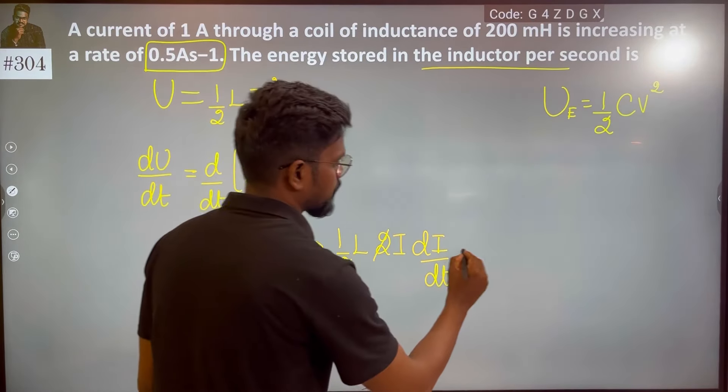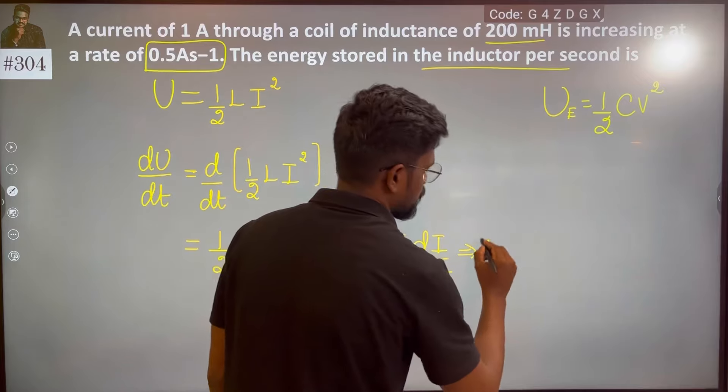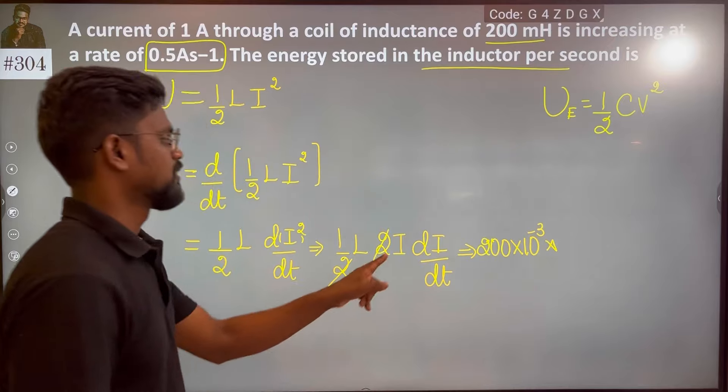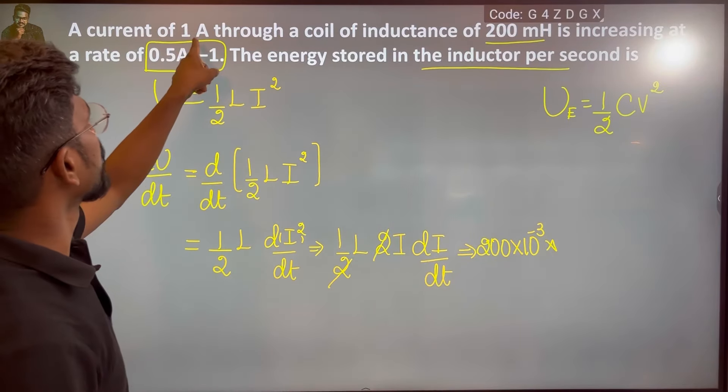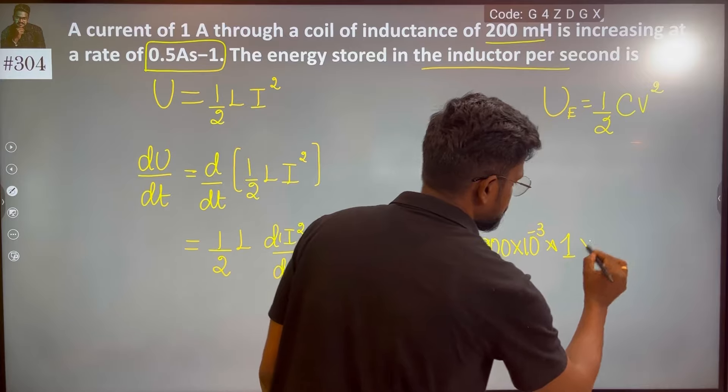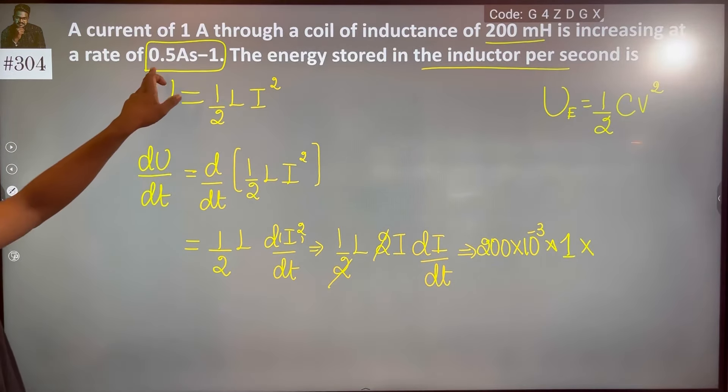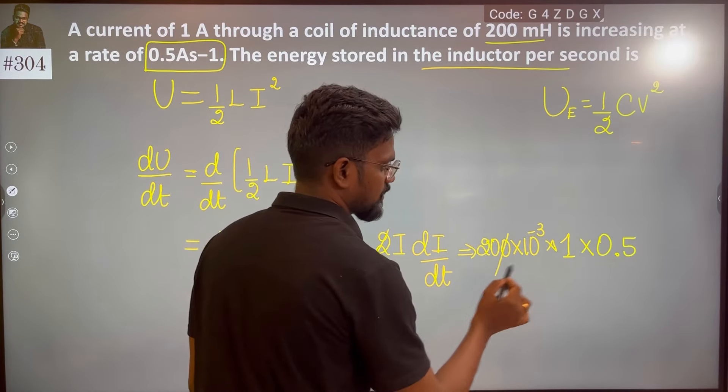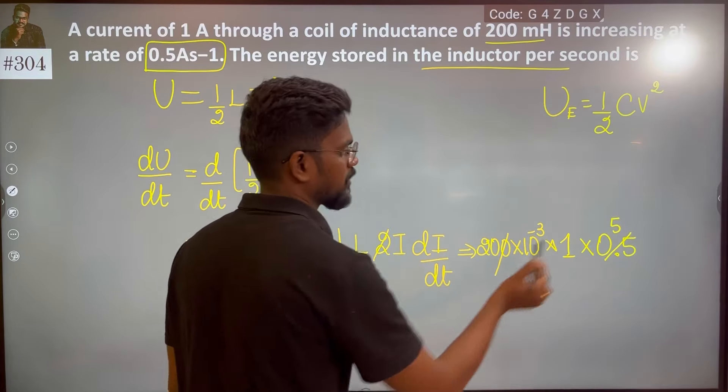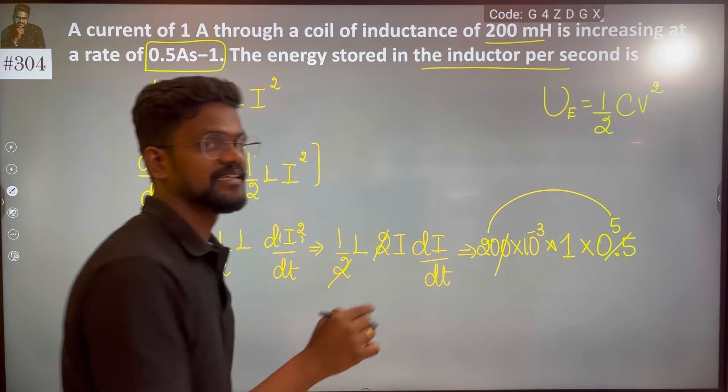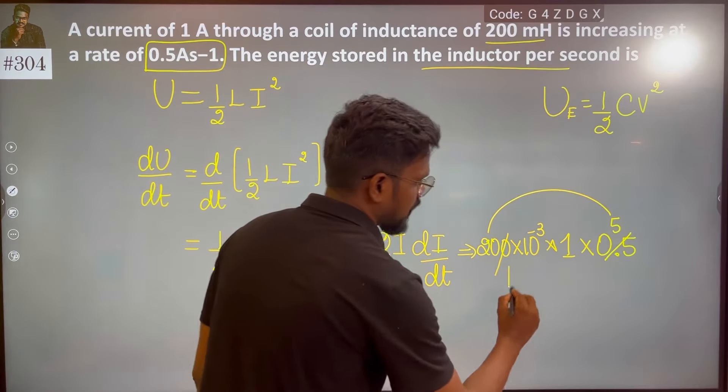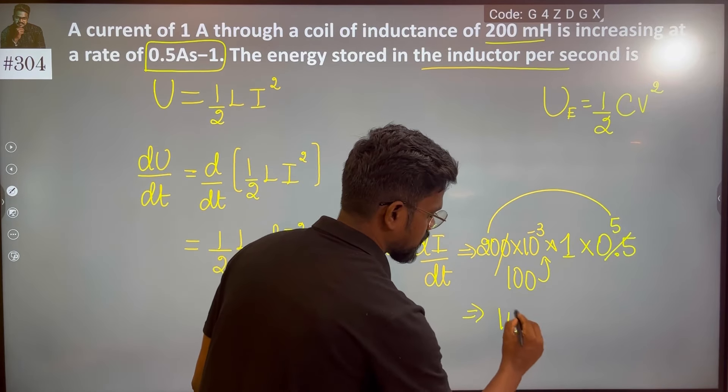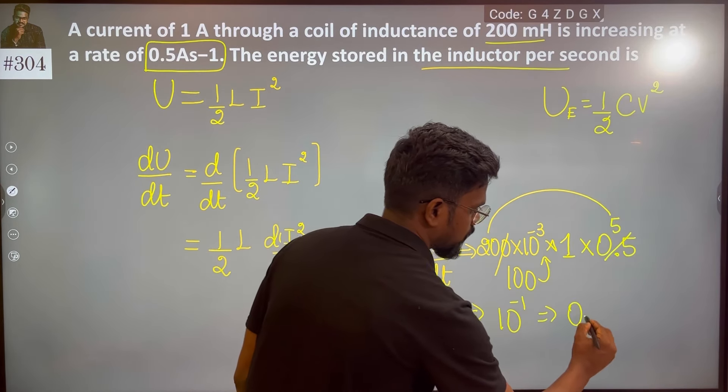So, if you know all the data, the inductance is 200 milli, you have current, so current is 1 Ampere. So, it is 0.5. So, if I calculate, it comes to 0.1.